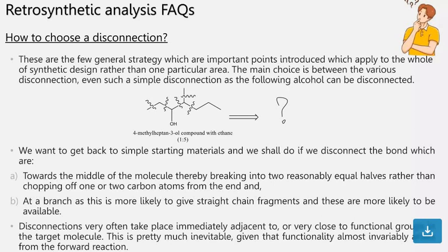At a branch, as this is more likely to give straight chain fragments and these are more likely to be available. Disconnections very often take place immediately adjacent to or very close to functional groups in the target molecule and this is pretty much inevitable given that functionality almost invariably forms the forward ratio.